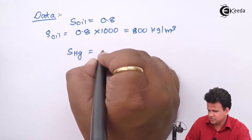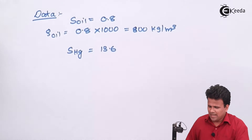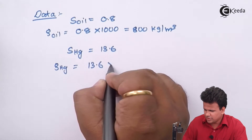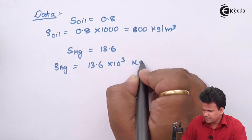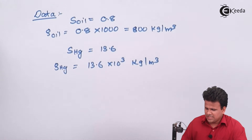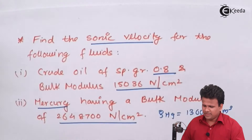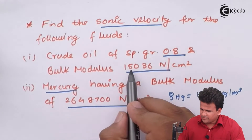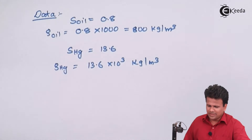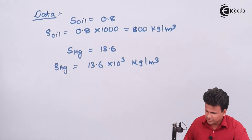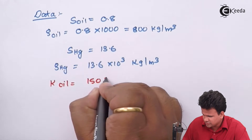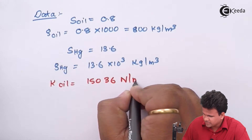The specific gravity of mercury is 13.6, so the density of mercury is 13.6 × 10³ kg/m³. The bulk modulus of crude oil is given as 15036 N/cm², and the bulk modulus of mercury is 26488700 N/cm².